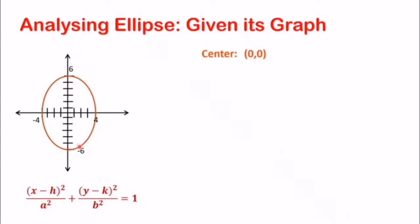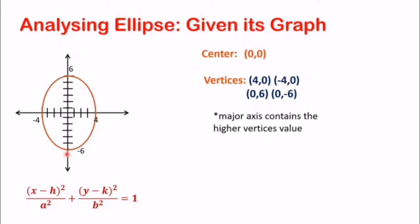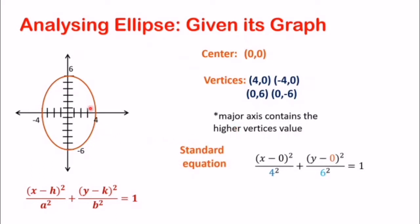Inalize natin. So mapansin nyo, ang center natin ay 0, 0 — nasa origin siya. Next, yung mga vertices namin ay: sa x-axis, we have 4, 0 and negative 4, 0; and sa y, 0, 6 and 0, negative 6. So meron tayong apat na vertices — apat ang vertices ng ating ellipse. The major axis contains the higher vertices value. So the higher vertices value is 6, so ang major axis natin ay along the y-axis.